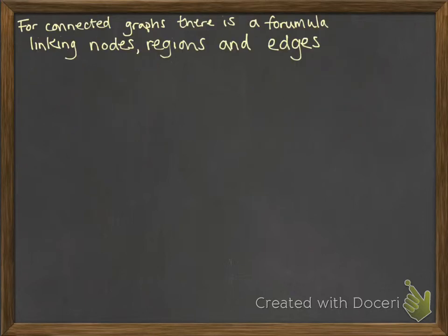For connected graphs, there is a formula linking nodes, regions, and edges. It's one of the things that mathematician Euler came up with. He started investigating what these graphs looked like and some properties between them.